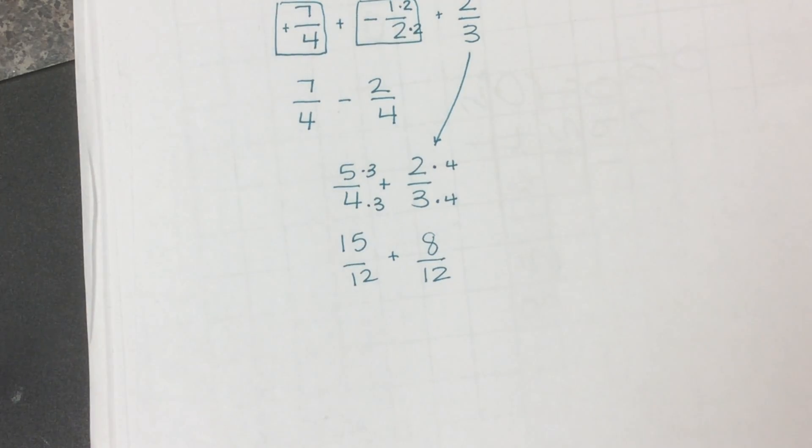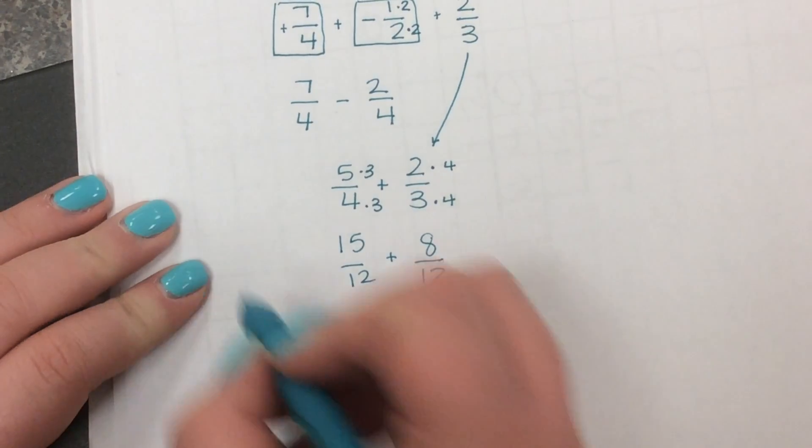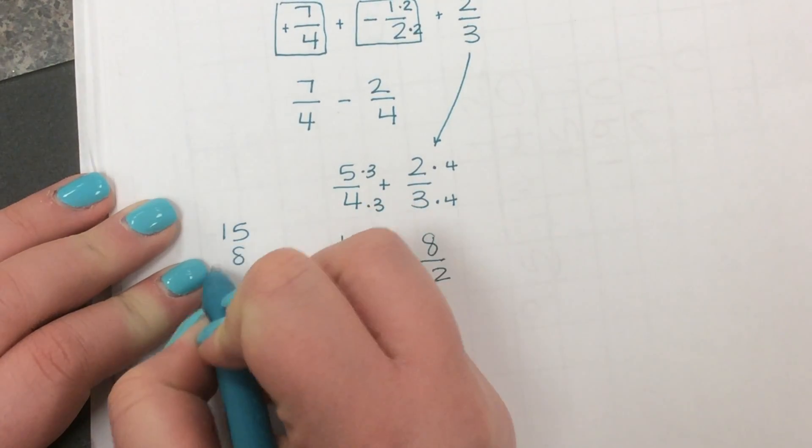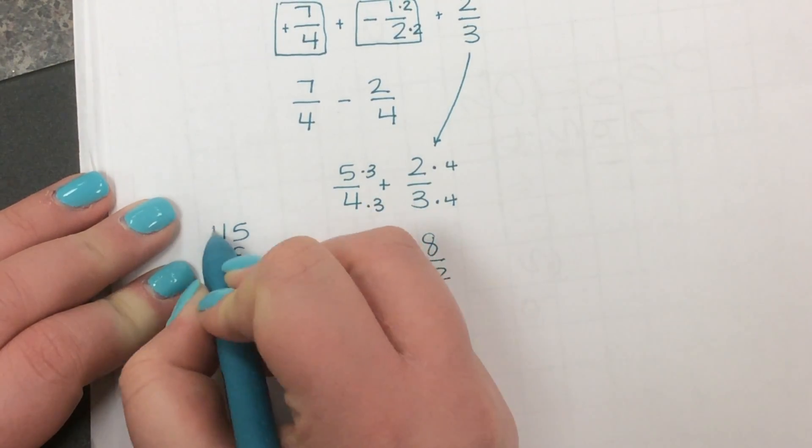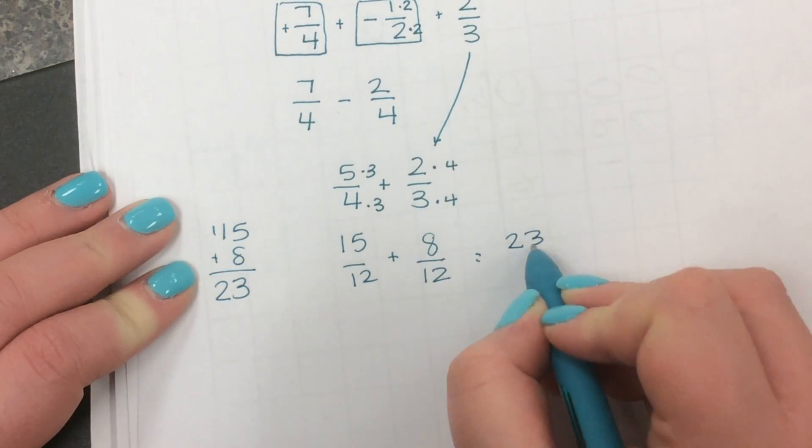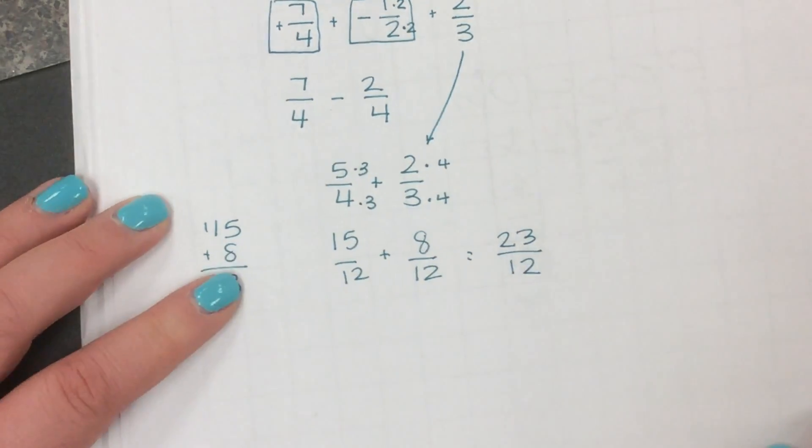And then here I have to do 15 plus eight, which I'm going to come over here and do that. Eight plus five is 13. Carry my one. That's going to be 23 twelfths.